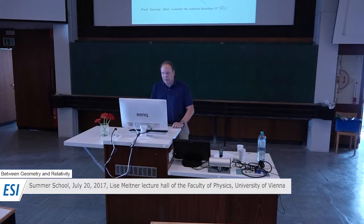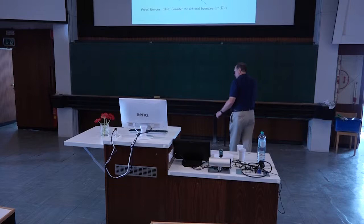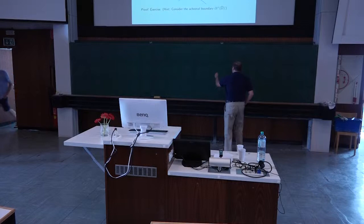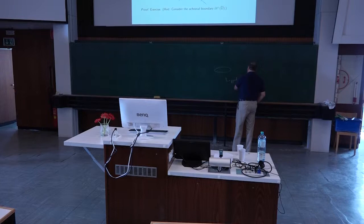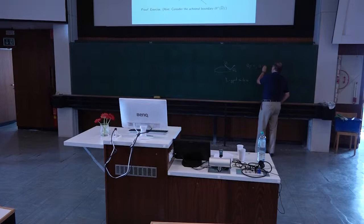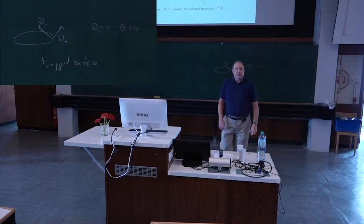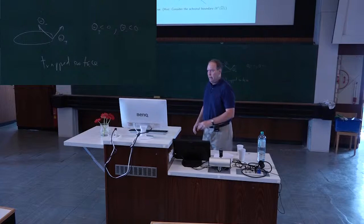Welcome to this afternoon session on topology and general relativity. Last time, in the part on Lorentzian geometry, we discussed the proof of the classical Penrose singularity theorem. The key ingredient in the proof is the existence of a trapped surface. You have the so-called null expansion scalars, theta plus and theta minus, and a trapped surface requires that both of those are negative.